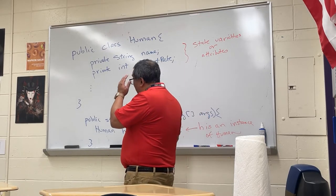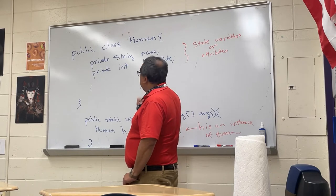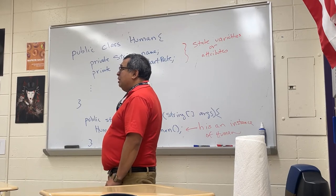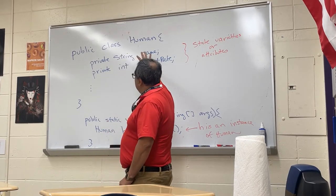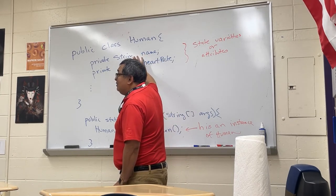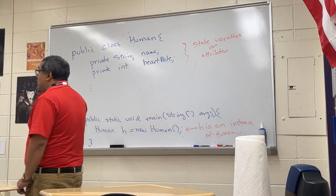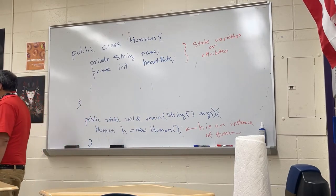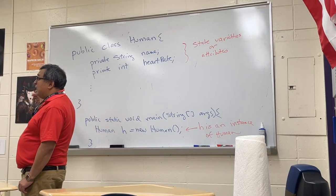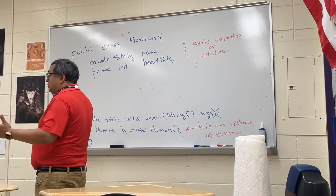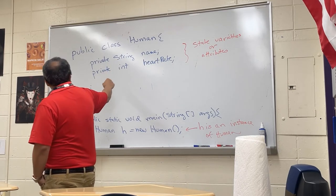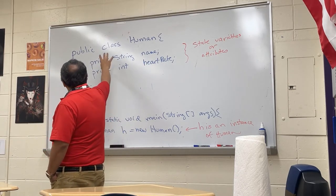So far this year I have been referring to these private variables that belong to a class as state variables, and that's a good description of them. But another term that is often used — these are called attributes of the class. The reason that's important is that the term "attribute" is the official term the College Board has decided to use. There are going to be questions on your quiz that ask what are the attributes of this class, or how many attributes does the class have. You can see name and heart rate are the attributes of the human class.